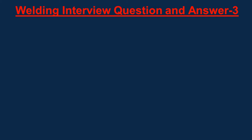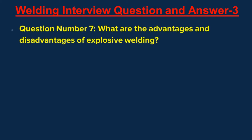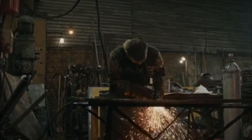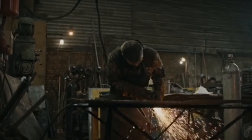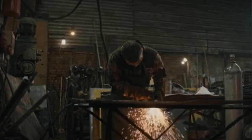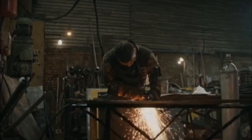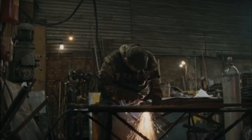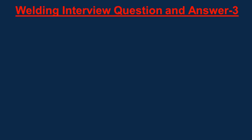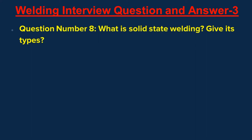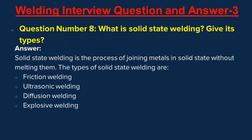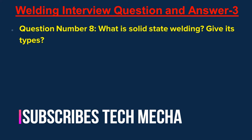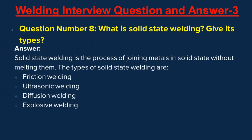Question number seven: What are the advantages and disadvantages of explosive welding? Answer: Advantages — it is a simple and fast process, the welding strength is high, and large surfaces can be welded. Disadvantages — it is a risky process requiring high carefulness, high brittle metals cannot be welded, and it is not suitable for welding metals of low melting point. Question number eight: What is solid state welding? Give its types. Answer: Solid state welding is the process of joining metals in solid state without melting them. Types include friction welding, ultrasonic welding, diffusion welding, and explosive welding.